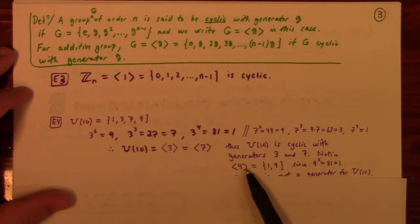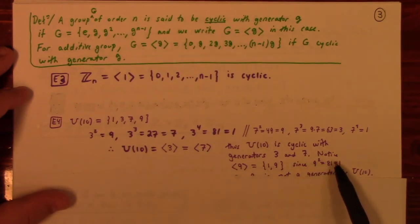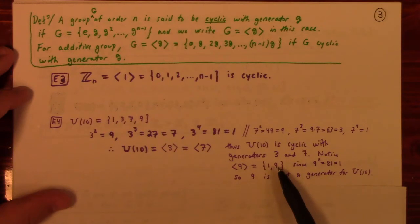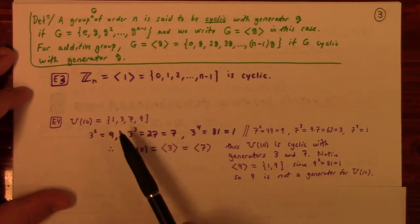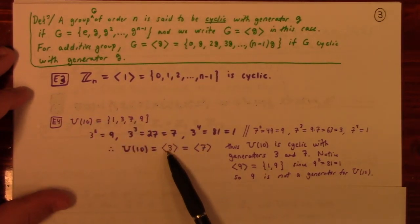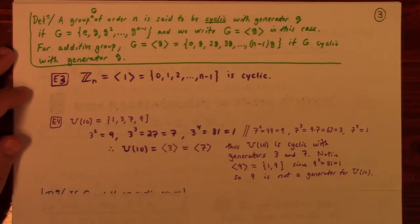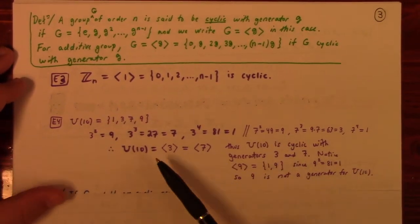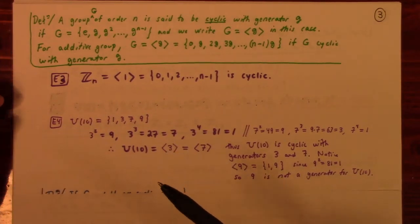Notice we can't use 9 as a generator because 9² ≡ 1 mod 10, so 9 just generates {1, 9}. So 9 is an element of order 2, whereas 3 and 7 are elements of order 4. If you have a group of order 4, you need an element of order 4 to generate it. If it's not possible to generate the group by an element whose order equals the order of the group, then the group is not cyclic.